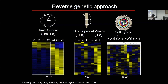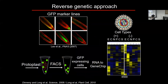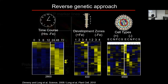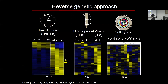We used fluorescence-activated cell sorting, which allowed us to isolate specific cell types exposed to iron-deficient conditions. This allowed us to produce one of the highest-resolution transcriptional profiles of a plant root in response to iron deficiency stress. My next goal was to identify putative transcription factors and use a reverse genetic approach to figure out if they play a key role in this response.